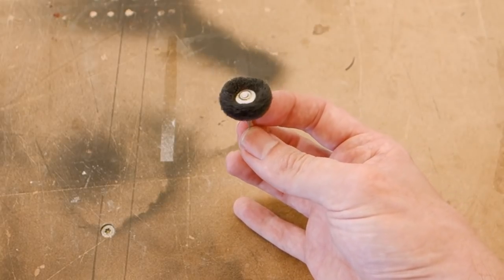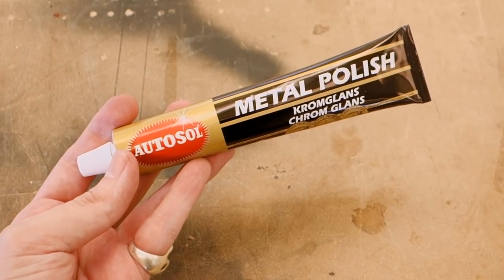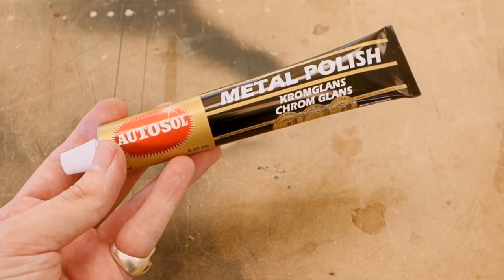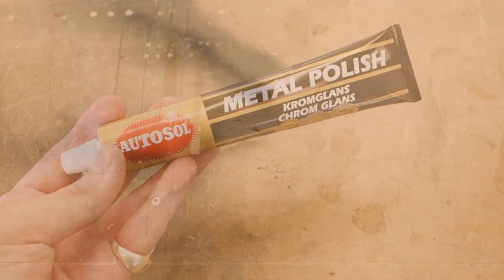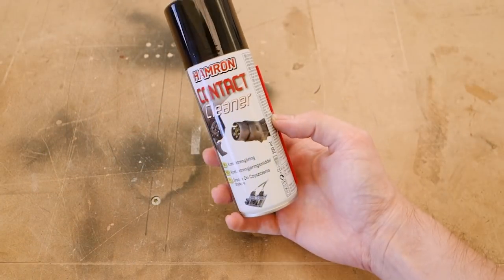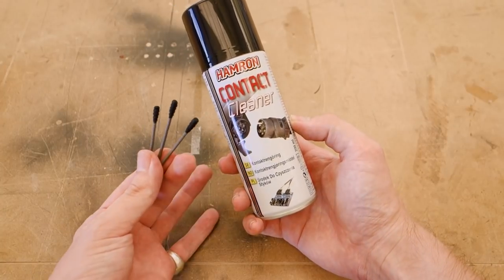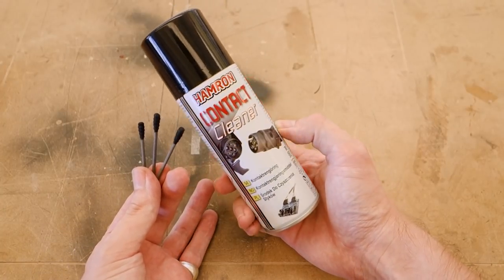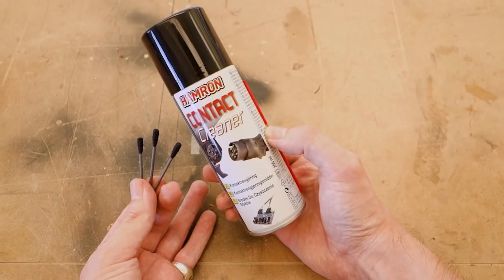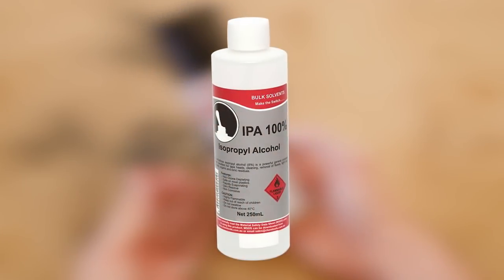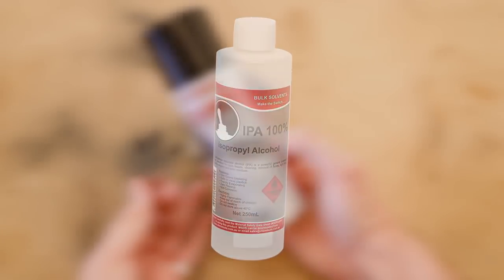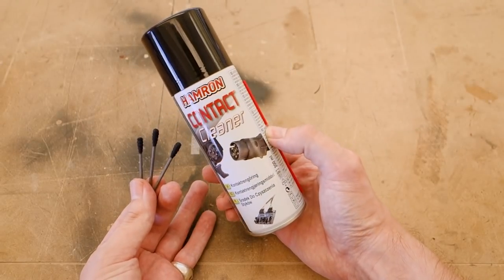For polishing we'll use one of my favorite compounds, autosol metal polish, which is great for getting a high shine on a wide variety of materials. To clean out all the gunk inside the switches we'll use some contact cleaner and q-tips. This is mostly isopropyl alcohol in a spray can, so by all means you can just use alcohol as well. The important part is that it cleans without leaving any coating or residue behind.